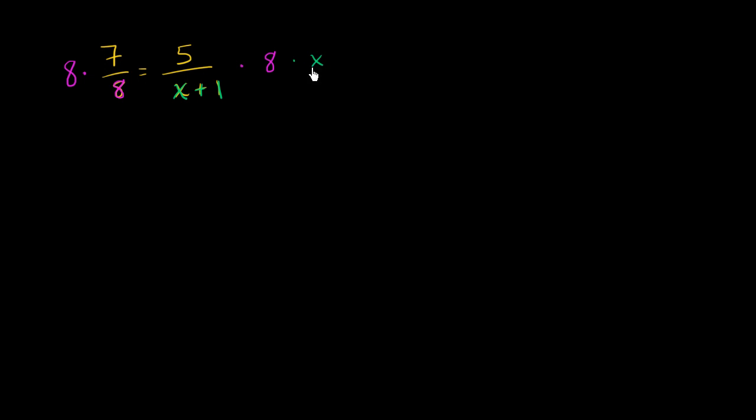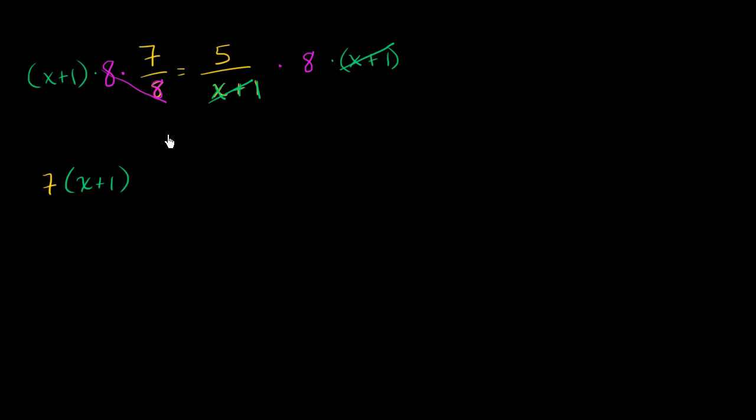Similarly, if I want to get this x plus 1 out of the denominator, I could multiply by x plus 1 right over here. But I have to do that on both sides if I want my equality to hold true. And notice, when you do what we just did, this is going to be equivalent to cross-multiplying. Because these 8's cancel out, and this x plus 1 cancels with that x plus 1 right over there. And you are left with 7 times x plus 1 is equal to 5 times 8.